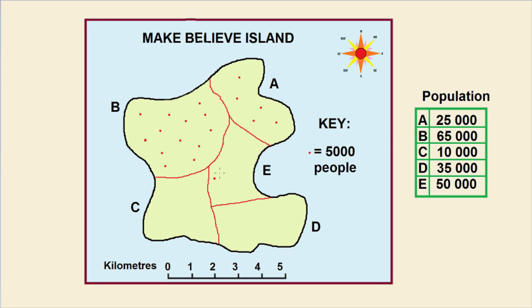Region C has 10,000 people which is 25,000 people which is 2 dots: one, two.